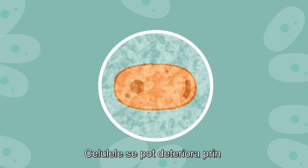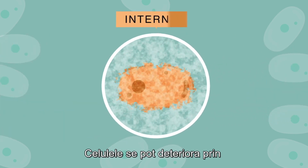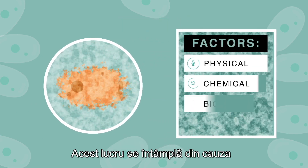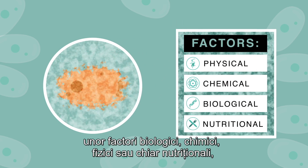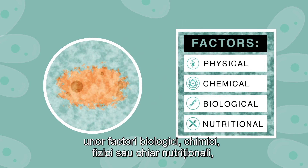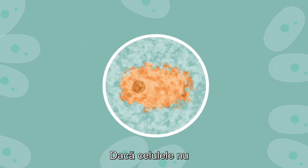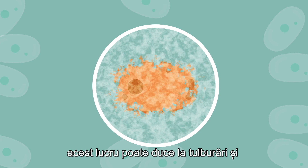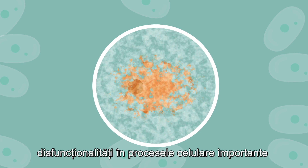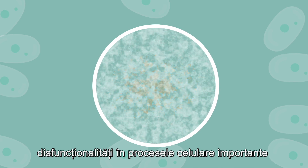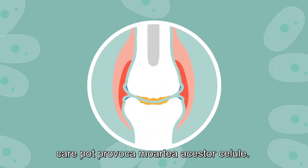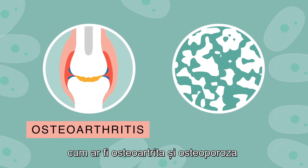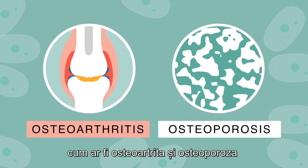Cells may become damaged through changes to their internal or external environments, and this happens due to physical, chemical, biological, or even nutritional factors. If cells are not able to perform their proper function, this can lead to disturbances and malfunctions in important cellular processes, which can cause these cells to die. This is how degenerative musculoskeletal diseases such as osteoarthritis and osteoporosis can occur.